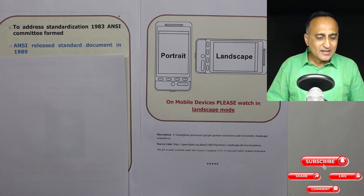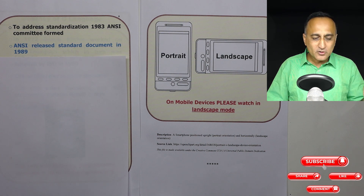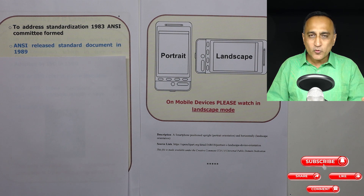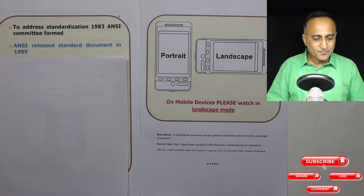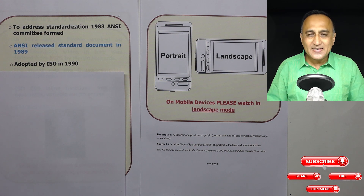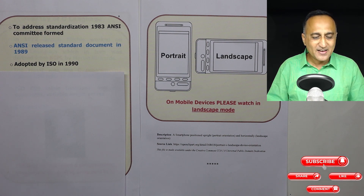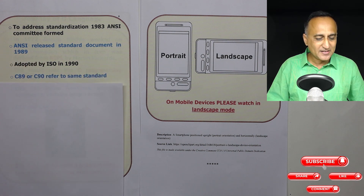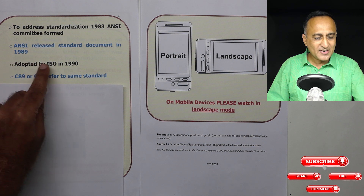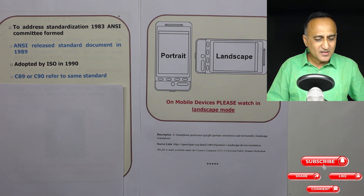In 1989, after about four to five years, the American National Standards Institute committee released the official standard version of C. This standard was then adopted by the International Standards Organization in 1990. So C89 and C90 refer to the ANSI standard of 1989 and the ISO standard of 1990, which basically mean the same thing.